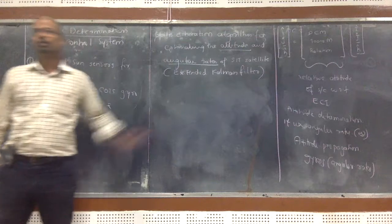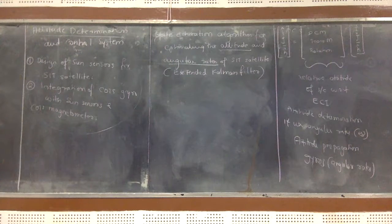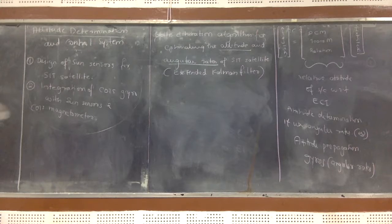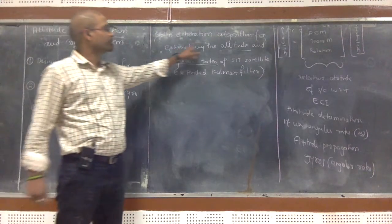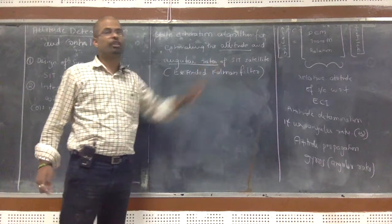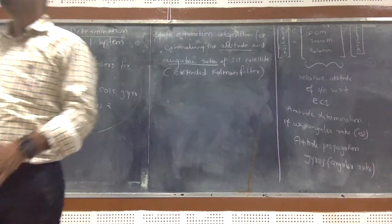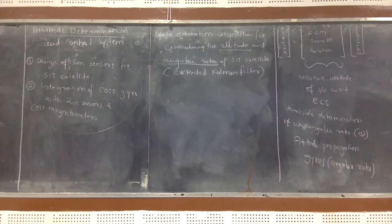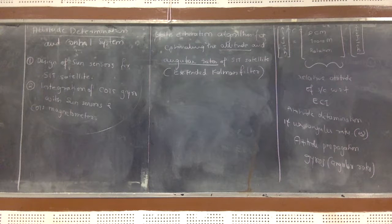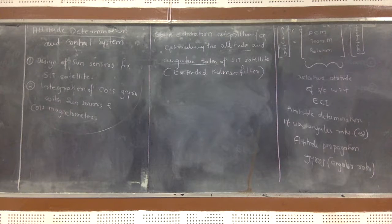This is essentially like a least squares approach — you are trying to minimize the error and get the state of the system. Do you understand what the state of the system is? Remember what I said about a mathematical model. A mathematical model is nothing but an input-output relation.